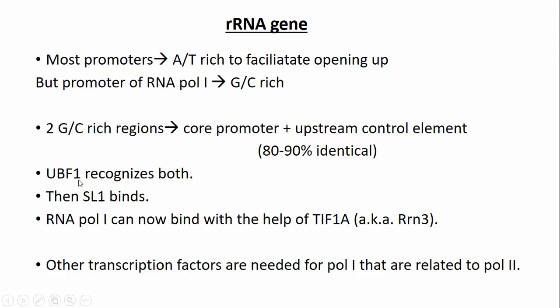These GC-rich regions are recognized by UBF1, upstream binding factor 1. After UBF1 binds, SL1 binds. Only then can RNA Polymerase I bind, with the help of TIF1A, which is also known as RRN3.